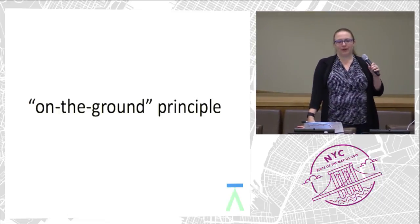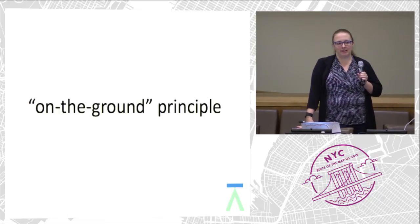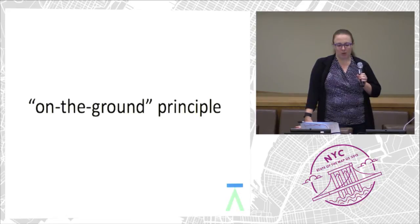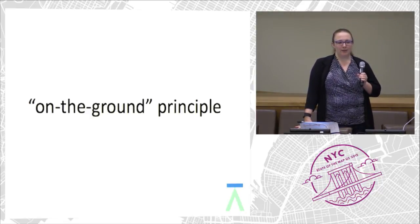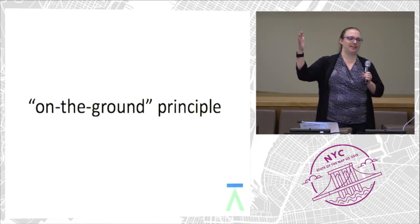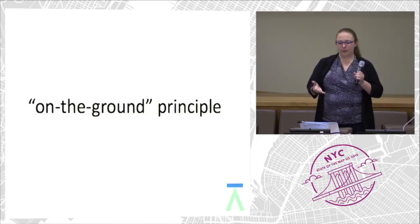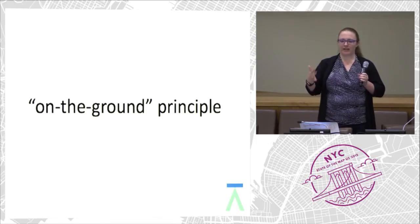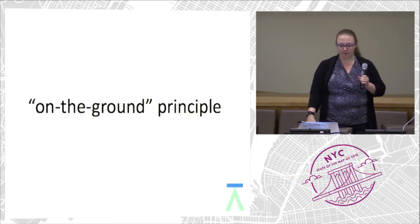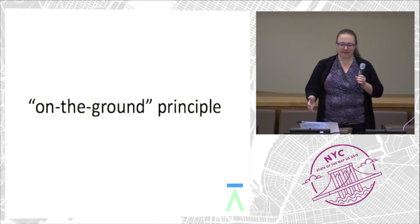Those deeply involved in OpenStreetMap are aware of the on-the-ground principle. In researching this presentation, it turns out it's not that well documented — there are a couple of examples in the wiki, but there's no single page that says 'on the ground rule.' What this means is that you're mapping concrete things that you can see most of the time. You're not mapping opinion; you're mapping facts.